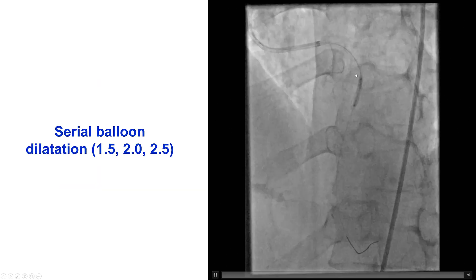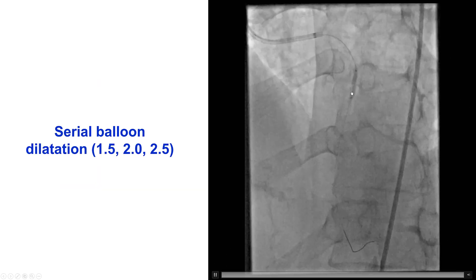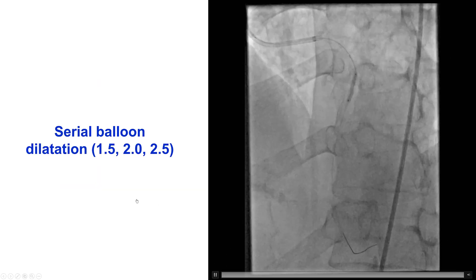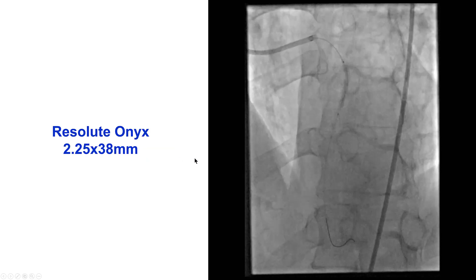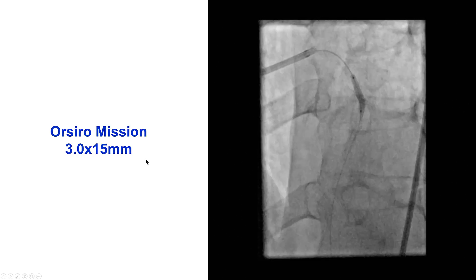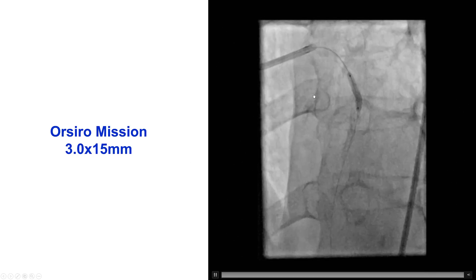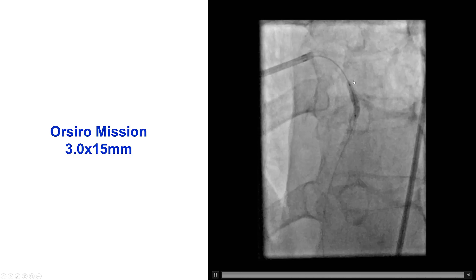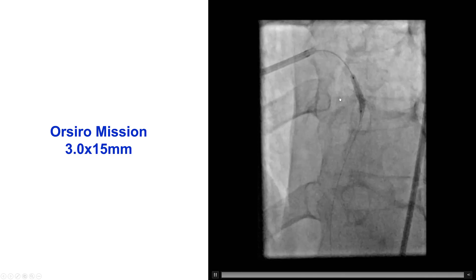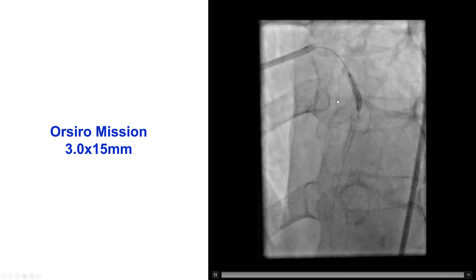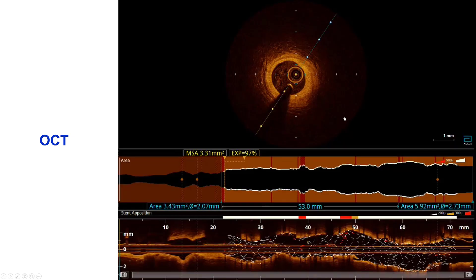We were then able to successfully expand the lesion with increasingly sized balloons — 1.5, 2.0, and 2.5 mm — and then deployed a 2.5 by 38 mm stent. We overlapped more proximally with an Orsiro stent, chosen due to its smaller strut thickness to minimize the risk of occluding the diagonal branch.